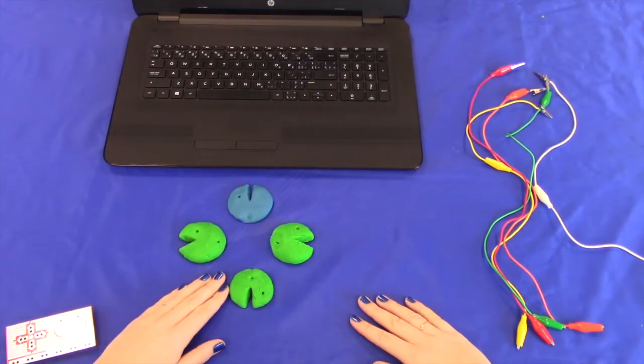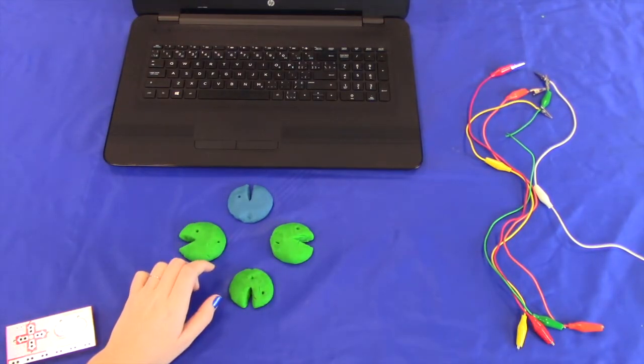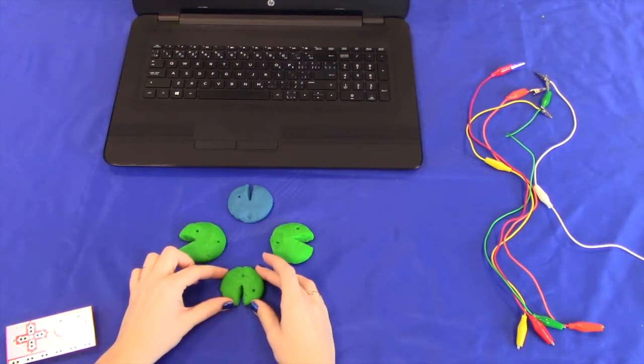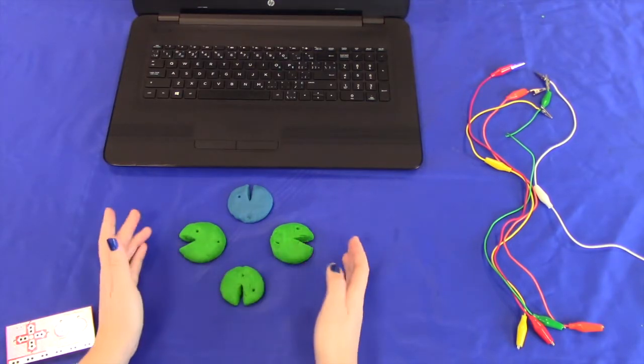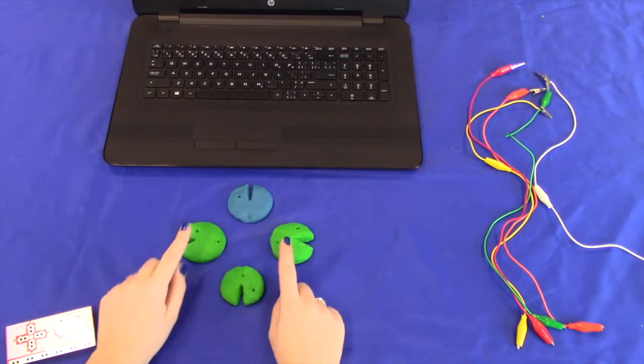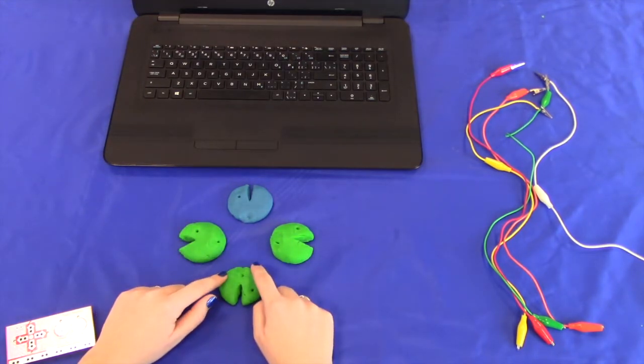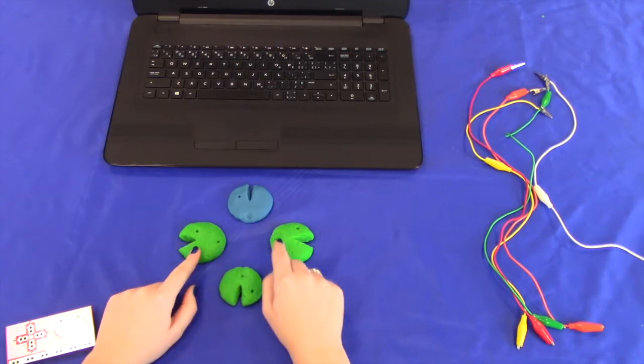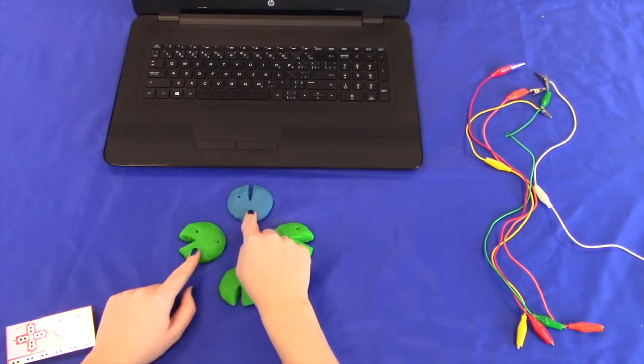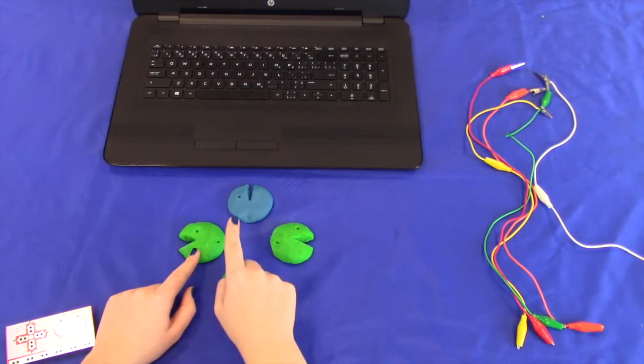In addition to our Makey Makey supplies, you'll also need some Play-Doh. I've gone ahead and created four Play-Doh buttons. You can make your four buttons any shape you'd like. Since we're playing Pac-Man, I decided to go with Pac-Man shape buttons. Likewise, these don't need to be different colors. I've selected blue as the color to signify up for today.